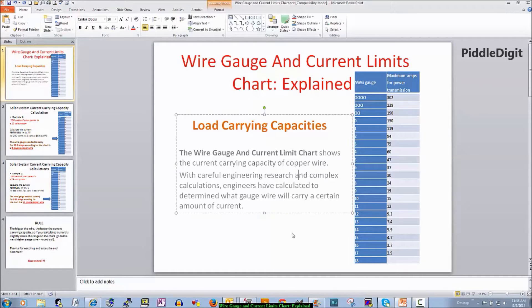The wire gauge and current limit chart shows the current carrying capacity of copper wire. With careful engineering research and complex calculations, engineers have calculated to determine what gauge wire will carry a certain amount of current.